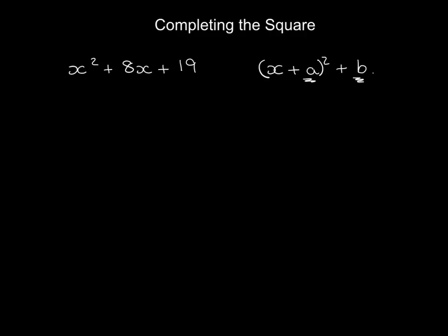What you do is you half this. So it's 8 divided by 2. Half that coefficient of x. If you do that you get 4. That number goes straight in there. So it's going to be x plus 4 squared plus something.